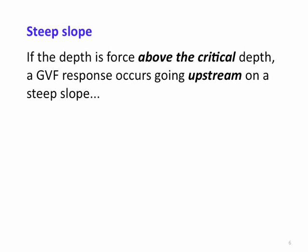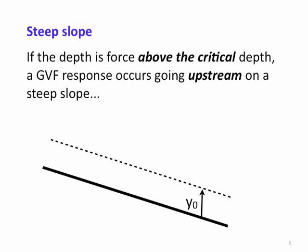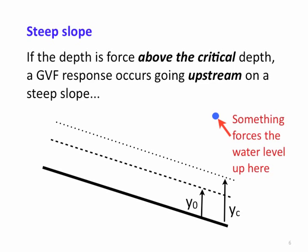For the third case on a steep slope, consider what happens when something forces the water level up above the critical depth. Now the flow is subcritical, but it wants to return to normal depth. There is a GVF response curve that moves back towards normal, but it cannot cross the critical depth — no GVF curves actually cross the critical depth. They come close to it, but crossing requires a rapidly varying flow response, which we will discuss in another section.